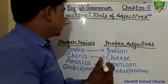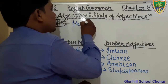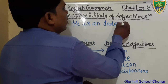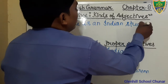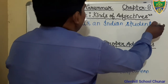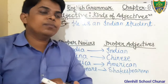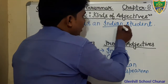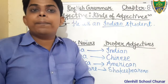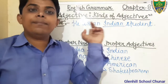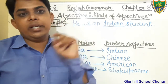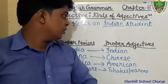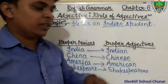Example: 'He is an Indian student.' In this sentence, the word 'student' is a noun. The word 'Indian' is the adjective. What kind of adjective? Proper Adjective — because it is made from the word 'India,' which is a Proper Noun. So Indian is a Proper Adjective in this sentence.